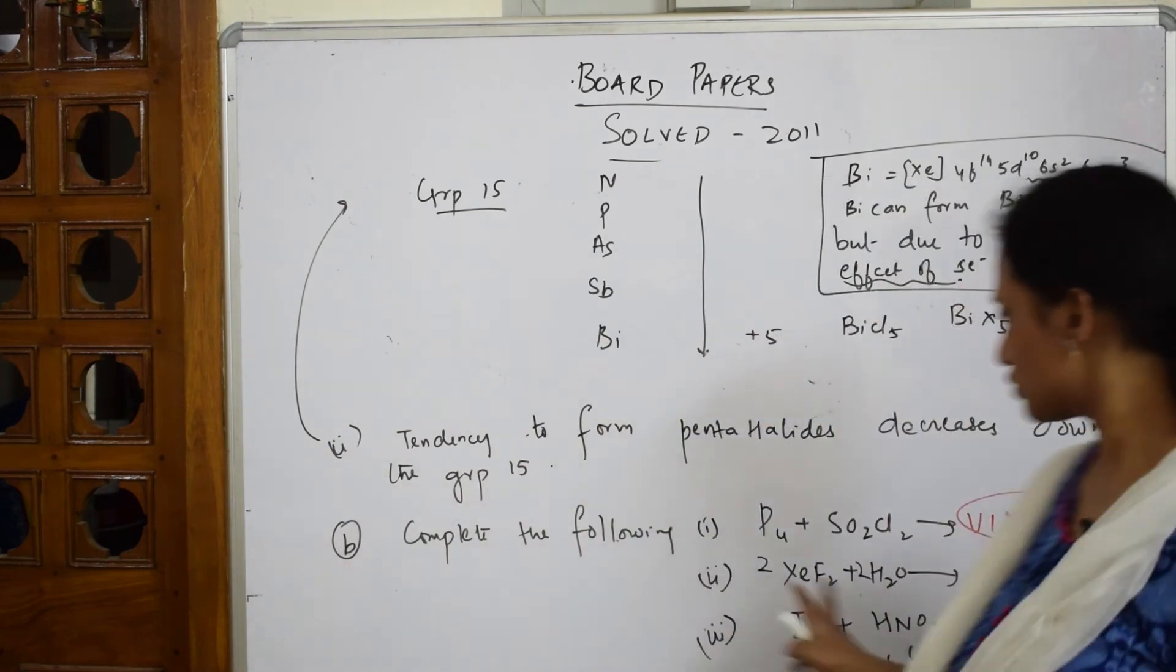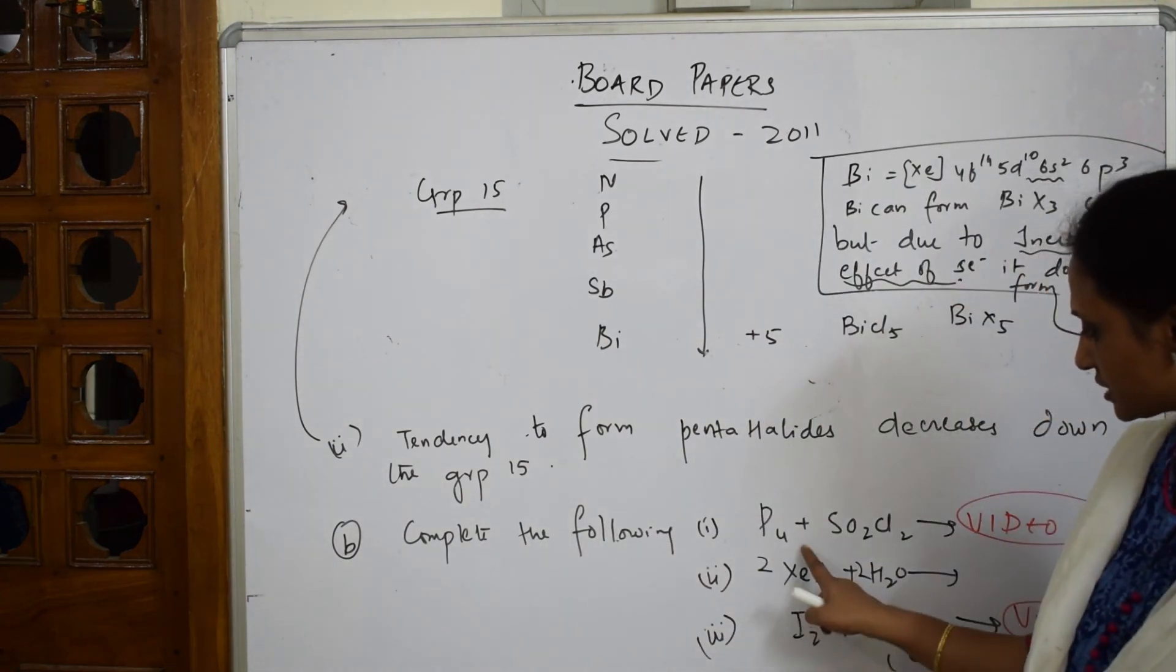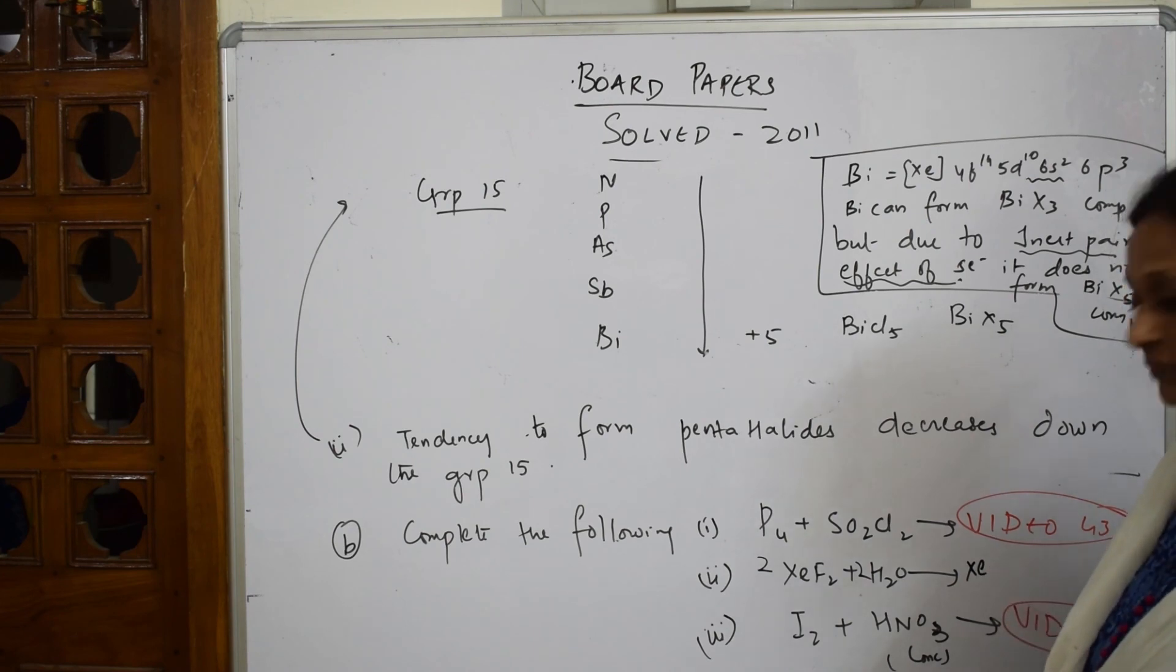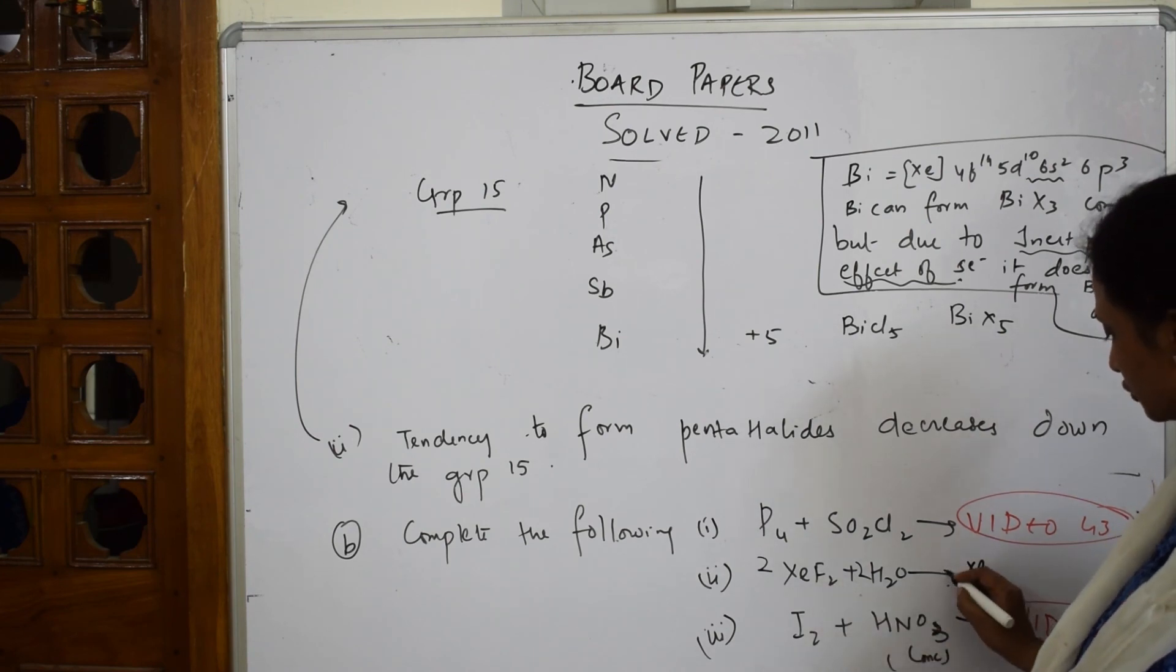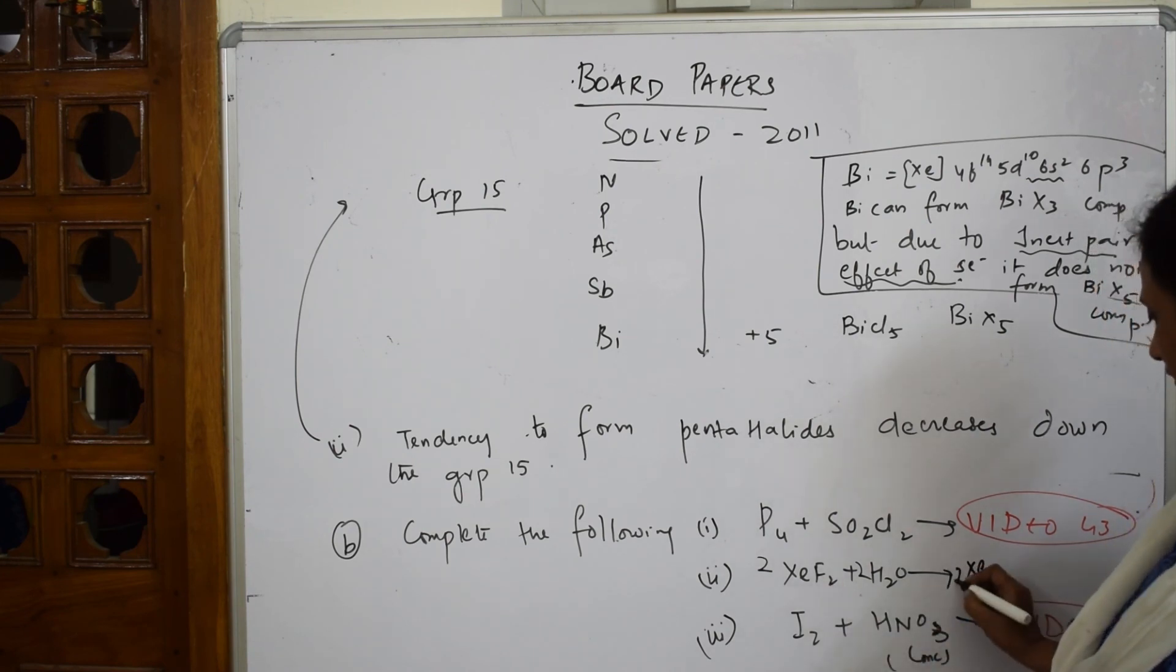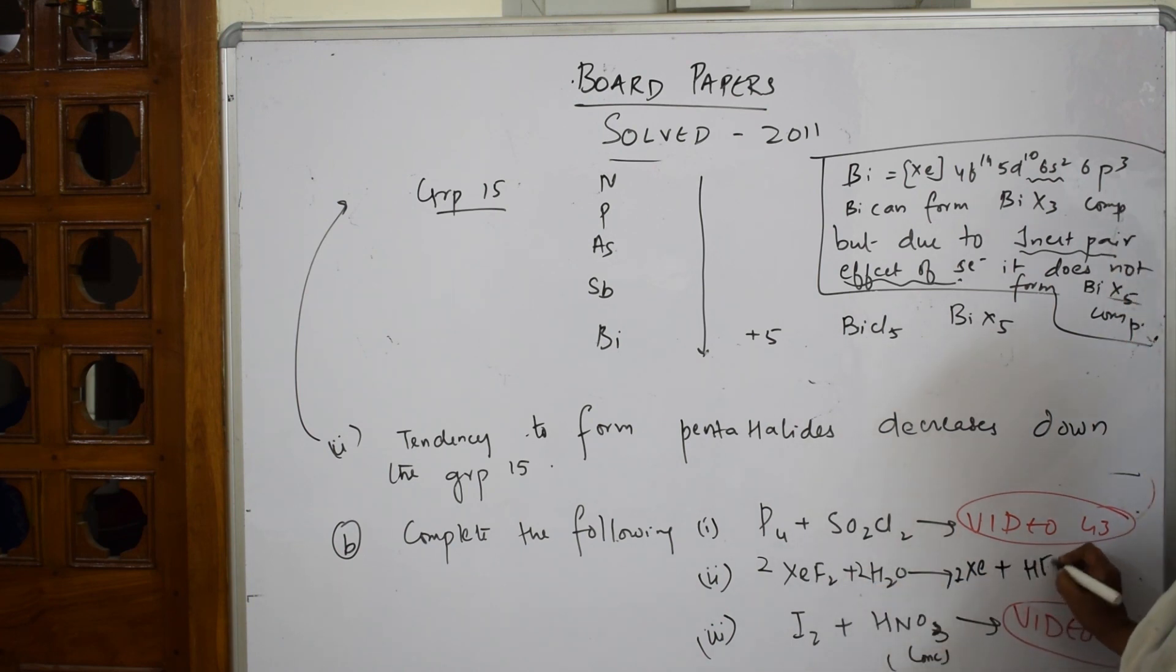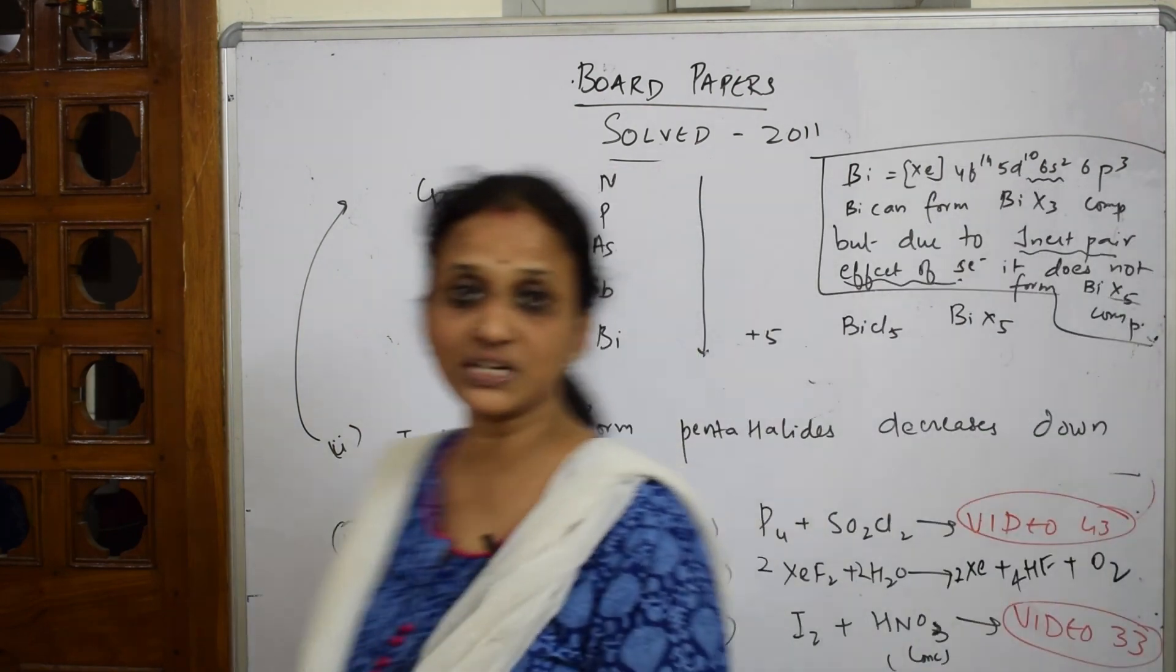When I have to show the hydrolysis of XeF2: pick up two moles, simple reaction. First, immediately the Xe-F bond is going to dissociate. How many moles? I've taken two. After this, HF is going to form - how many HFs? If I see this, it's two times two, so four HF. What else is left? Oxygens are two, so oxygen gas. These are the reactions of 2011 paper.